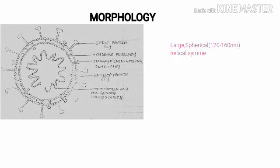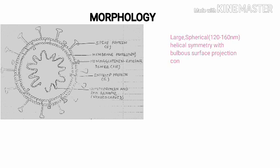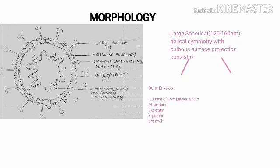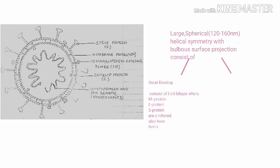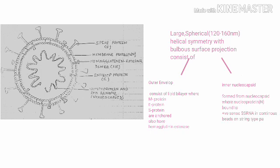Morphology. It is a large spherical particle, 120 to 160 nanometers, with helical symmetry and club-shaped surface projections. It consists of an outer envelope containing a lipid bilayer where M protein, E protein, and S protein are anchored, and also has hemagglutinin esterase. The inner nucleocapsid consists of nucleoprotein bound to a positive-sense single-stranded RNA in a continuous beads-on-string type pattern.